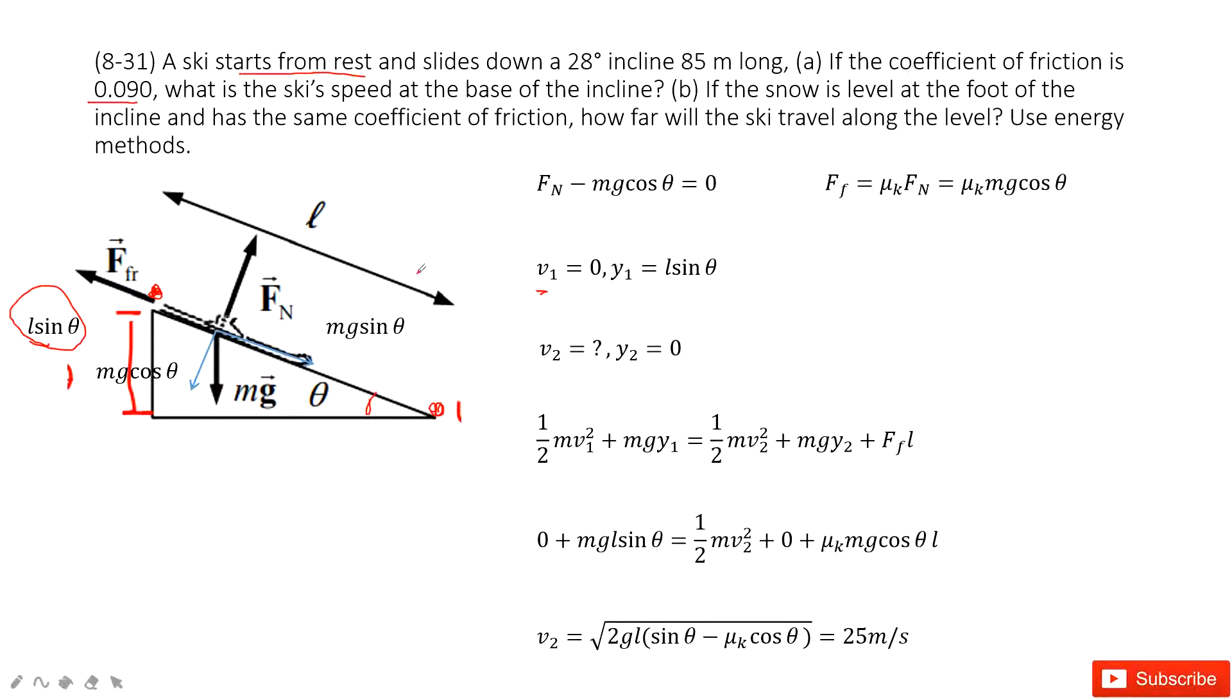It looks like we need to find the friction force first, and the distance it moved is L. We need to project the gravity into two components: Mg cos theta and Mg sin theta. In this way, we can find at the vertical direction to the surface.